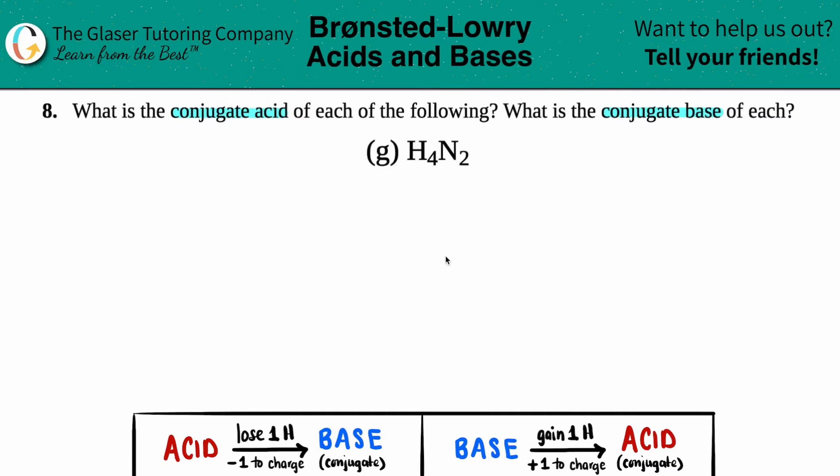In this case we have to find out the conjugate acid and the conjugate base of H4N2. Now if you could find a conjugate acid and a conjugate base of a single molecule like this one, that means in certain situations H4N2 can act as an acid but it could also act as a base. If it acts as an acid we will be able to find the conjugate base, and if it acts as a base in certain situations we could find the conjugate acid.